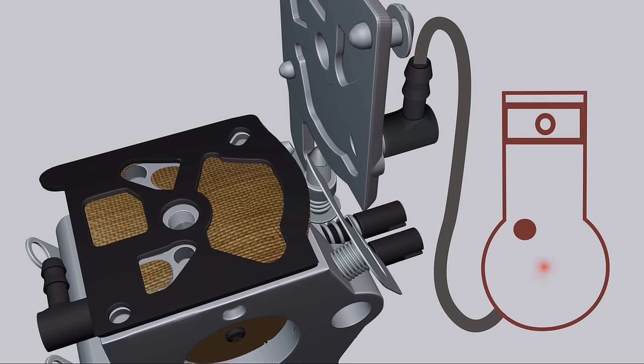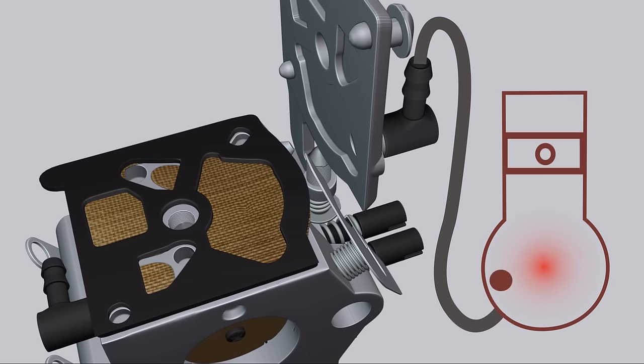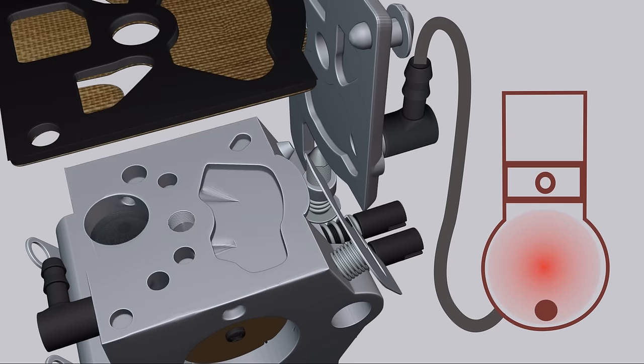When the piston moves down, it creates a positive pressure in the crankcase that exceeds atmospheric pressure. The pump diaphragm moves down, transferring pressure to the fuel in the bypass chamber.